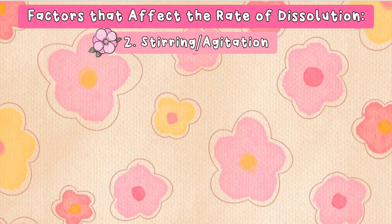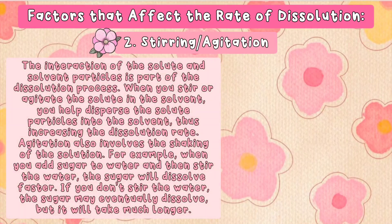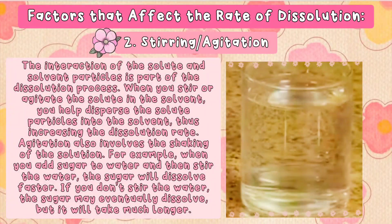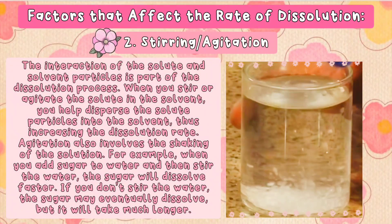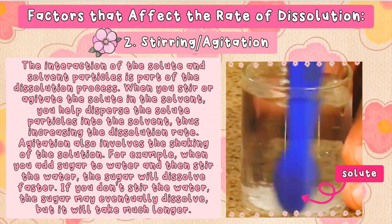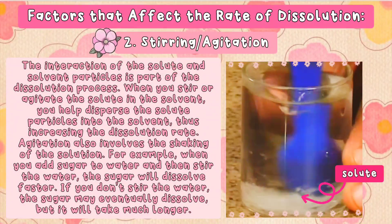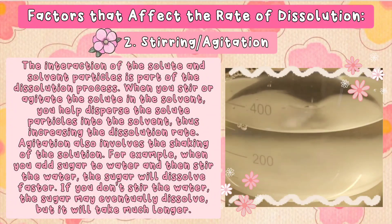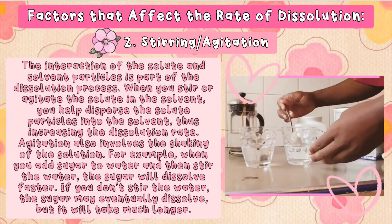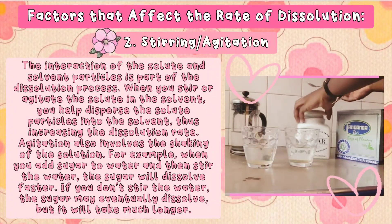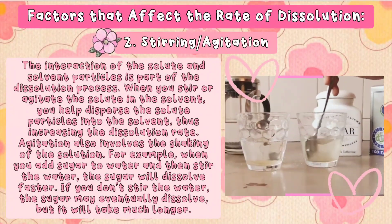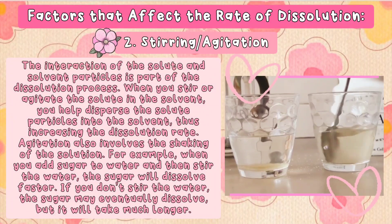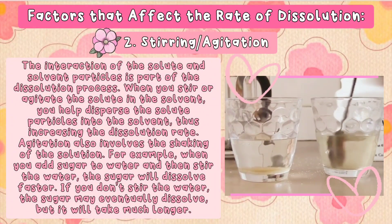Number two: stirring or agitation. The interaction of the solute and solvent particles is part of the dissolution process. When you stir or agitate the solute in the solvent, you help disperse the solute particles into the solvent, thus increasing the dissolution rate. Agitation also involves the shaking of the solution. For example, when you add sugar to water and then stir the water, the sugar will dissolve faster. If you don't stir the water, the sugar may eventually dissolve, but it will take much longer.